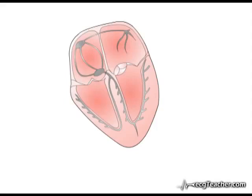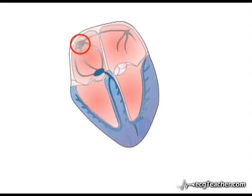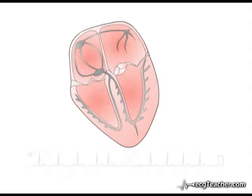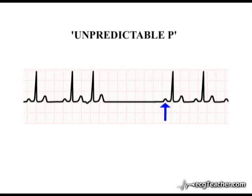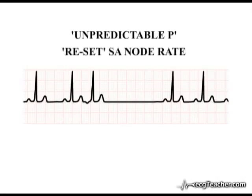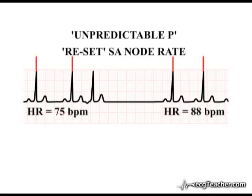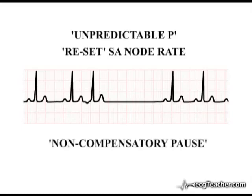In contrast to ventricular ectopics, discharge from an atrial ectopic will usually result in depolarisation of the cells of the SA node, temporarily suppressing their discharge. The SA node recovers its function after a pause of variable duration. As the duration of recovery is variable, the timing of the next P wave is not predictable. The next sinus discharge does not occur at a simple multiple of the P-to-P wave interval preceding the ectopic. Premature depolarisation of the SA node also has a broader effect on its function and may reset its inherent rate of spontaneous depolarisation, leading to a different heart rate — either faster or slower — following the ectopic. A pause with these characteristics is termed a non-compensatory pause.